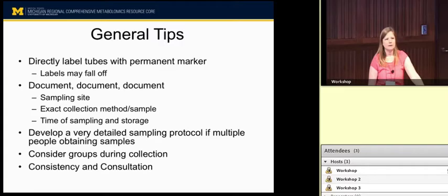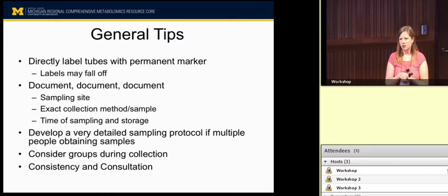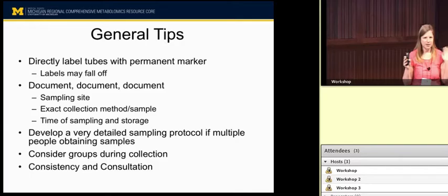Consider your groups during collection. If you have a control group and a disease group, don't always just process all of your controls followed by all of your disease samples. Try to randomize or intermix them, because timing is so important. It's best if you can mix them up so you're reducing that variability — don't just do one group solely followed by the other. Consistently be consistent.